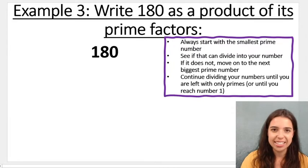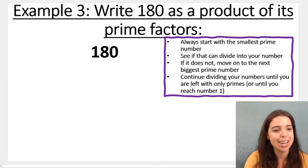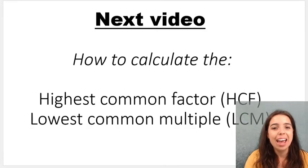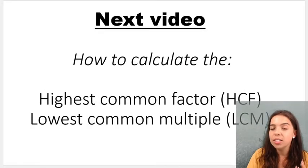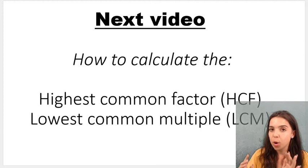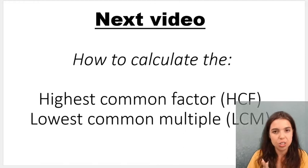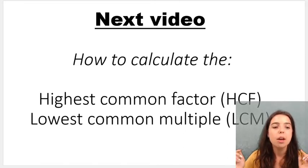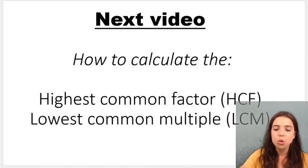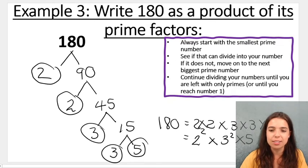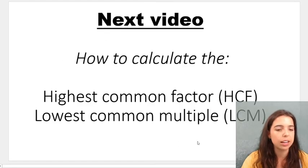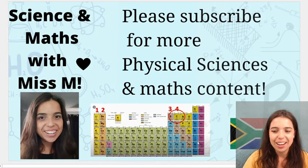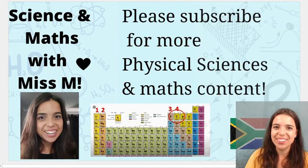Try it using a factor ladder if you prefer — you'll get to the same answer. Please subscribe because in the next video we're going to learn how to calculate the highest common factor (HCF) and lowest common multiple (LCM), using products of prime factors — using this method instead of listing it out like you may have done in grade six or seven. Awesome guys, we'll see you in the next video.